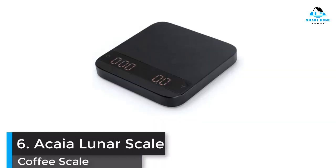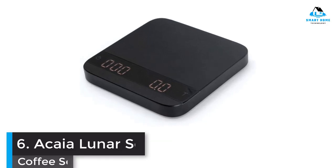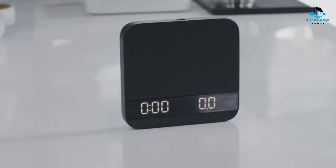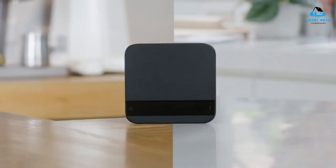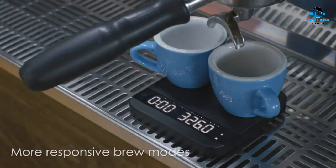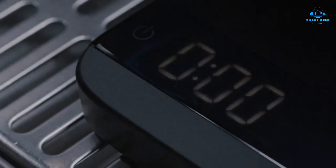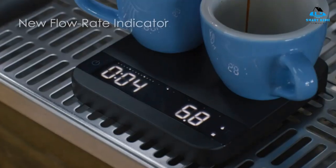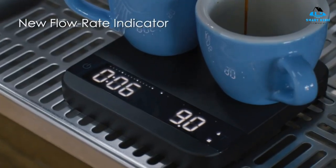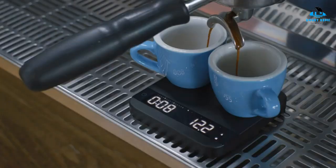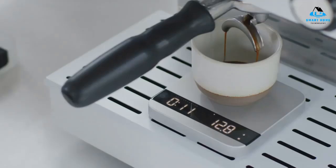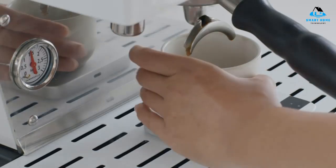Number 6. Acaia Lunar Scale. For the espresso lover, look no further than the Acaia Lunar. It's one of the smaller options on this list, and since it was specifically designed for espresso, it should fit directly on your espresso machine drip tray. This allows you to observe the scale's readout, which has one of the fastest response times as the espresso shot is being pulled. Another standout feature is the auto-start timer that kicks in when the weight of espresso hits the scale.